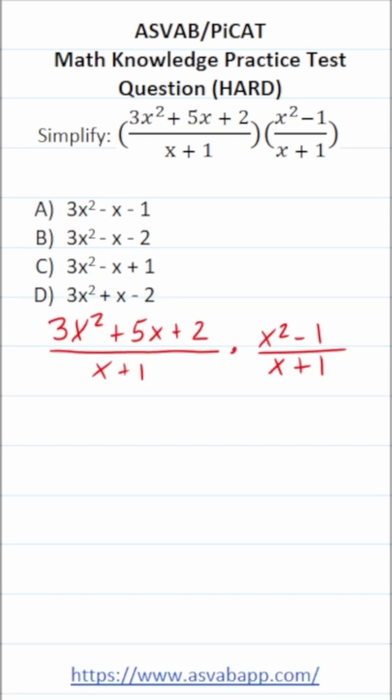What we're doing here is multiplying two rational expressions. And the first thing we're going to do to simplify this expression is we're going to factor this numerator and then we're going to factor this numerator. We're not going to do anything with the denominator just yet, so let's just copy those down as is.